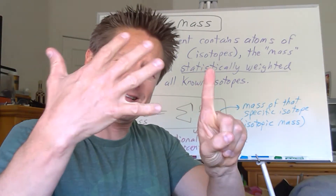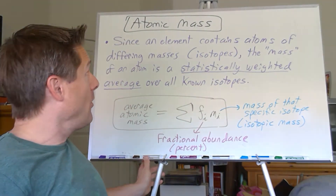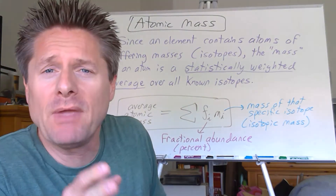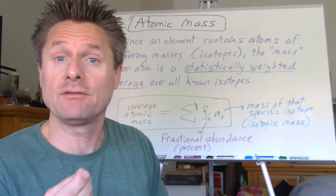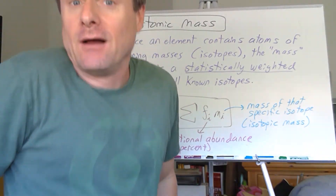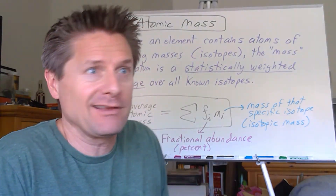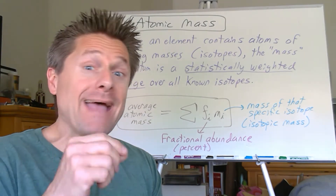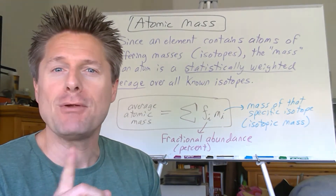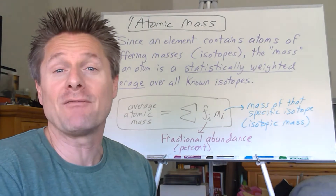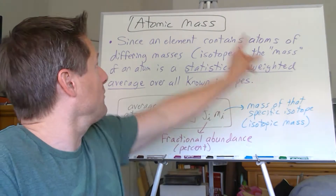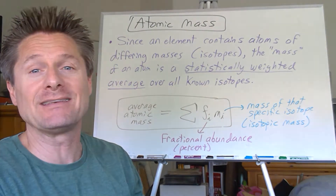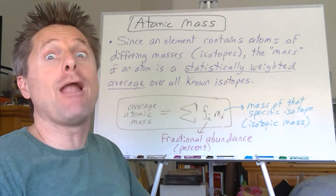Hey team, chemistry coach here - video number six in our journey of the atom. We're looking at atomic mass, which we've mentioned before when looking at mass number and atomic number. The mass number is the number of particles in the nucleus - protons plus neutrons - which is almost the entire mass of a particular atom. Because isotopes exist, atomic mass is much more difficult than you'd think - John Dalton didn't know about isotopes when he developed atomic theory.